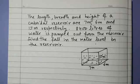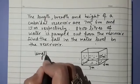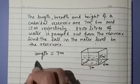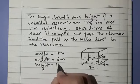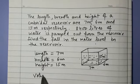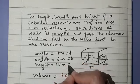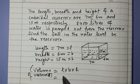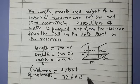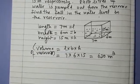So here, let us write down: length of reservoir is 7 meters, breadth is 6 meters, and height is 15 meters. We know that volume is L into B into H. So we are finding the volume of the reservoir, which is in the shape of a cuboid. Multiplying 7, 6, and 15 gives us 630 cubic meters.